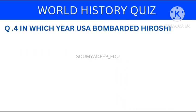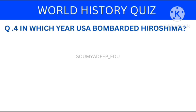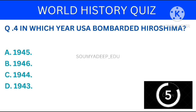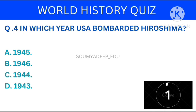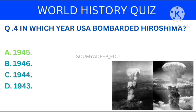So let's move to the next question. In which year did the USA bomb Hiroshima? The options are: 1945, 1946, 1944, 1943. Your time starts now. The answer is 1945.